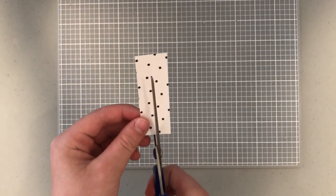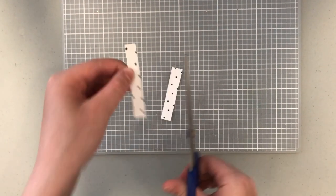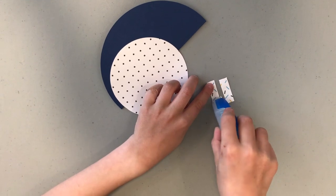Cut two small strips for the eyes. Use the adhesive to paste them at the front of the large circle.